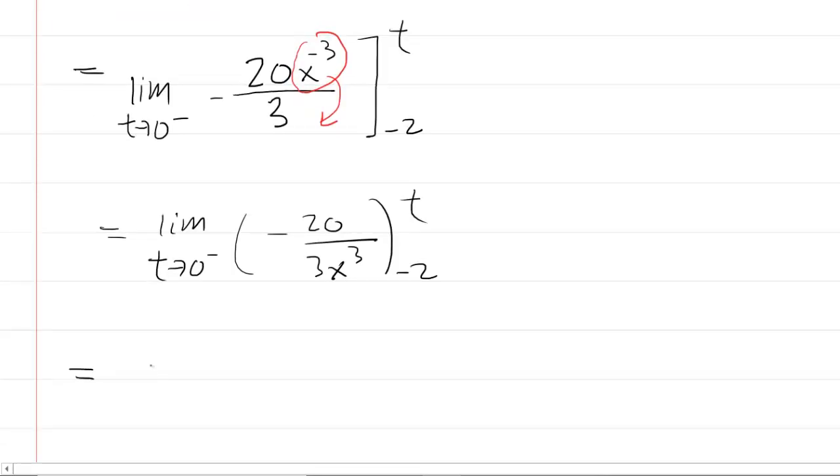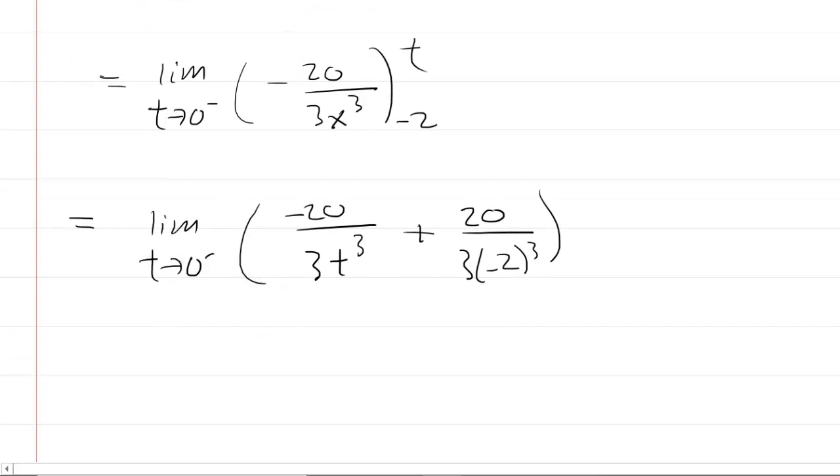Next, we'll plug in the bounds. Remember, the upper bound is plugged in first, so you're going to have negative 20 over 3t cubed, and then minus the negative 20 - wait, it's going to be minus negative, so let's just do plus 20 over 3 times negative 2 to the power of 3. Now something interesting happens here because we're letting t approach 0. So basically, you can plug 0 in for t. So when you do that, you're going to get negative 20 over 3 times 0 approached from the left cubed, plus whatever this is over here.